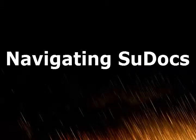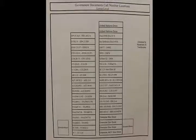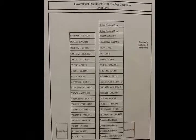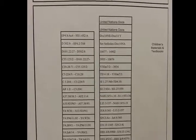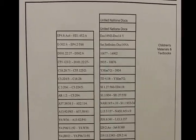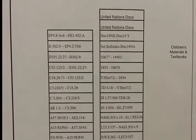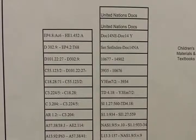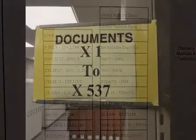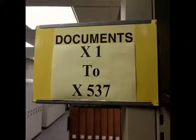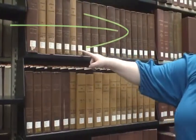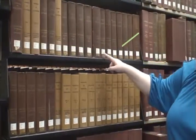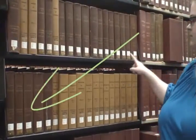Once you have determined the type of document you are looking for, you will need to find it. If you are looking for a printed volume, you will need to consult the shelf organization sign located at the front of the shelves. The way SUDOCs are shelved can be confusing, and the sign can be very helpful. Look for the range marker to find which shelves you want to start at, then proceed from left to right, and then down to the next shelf.